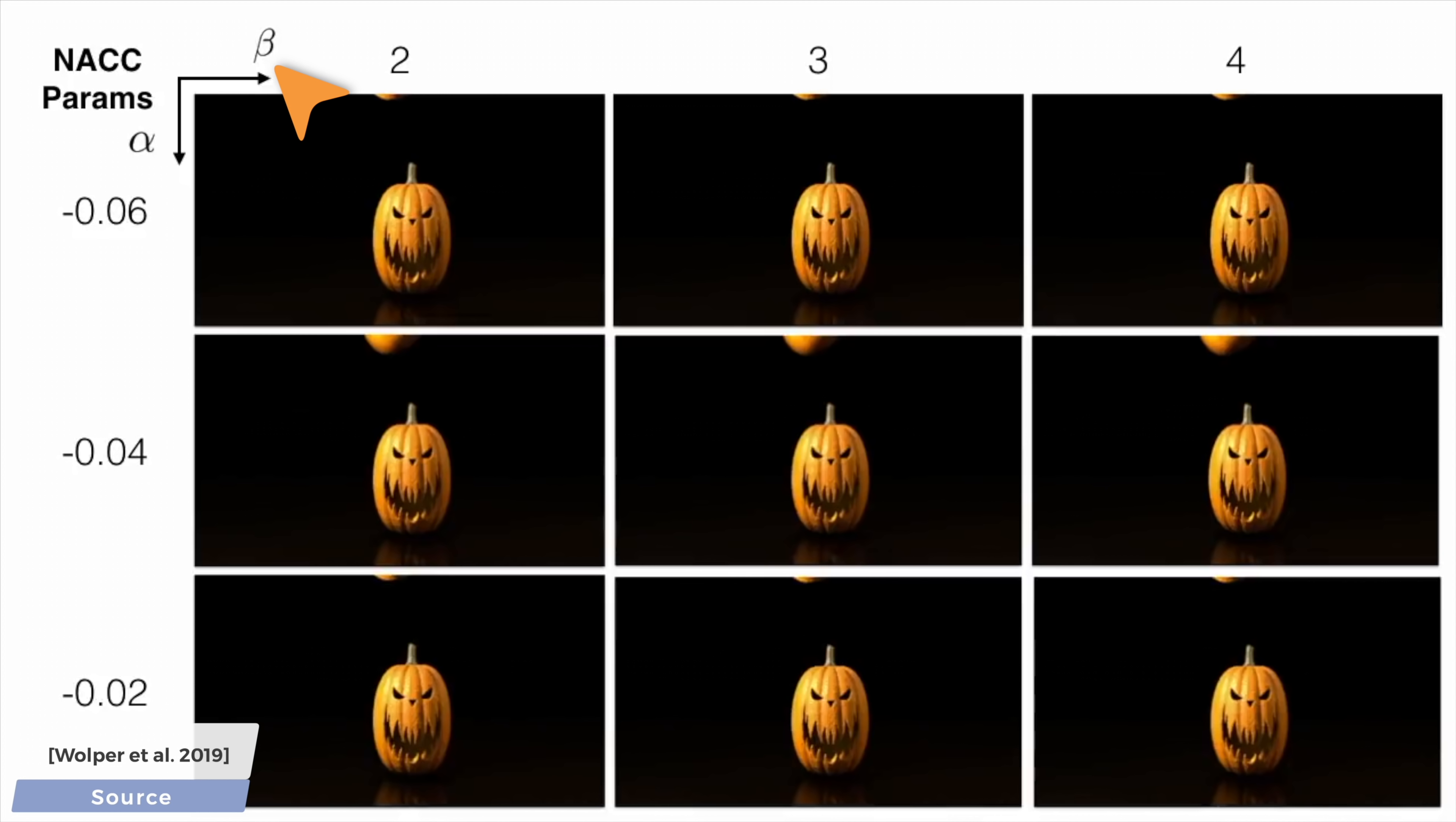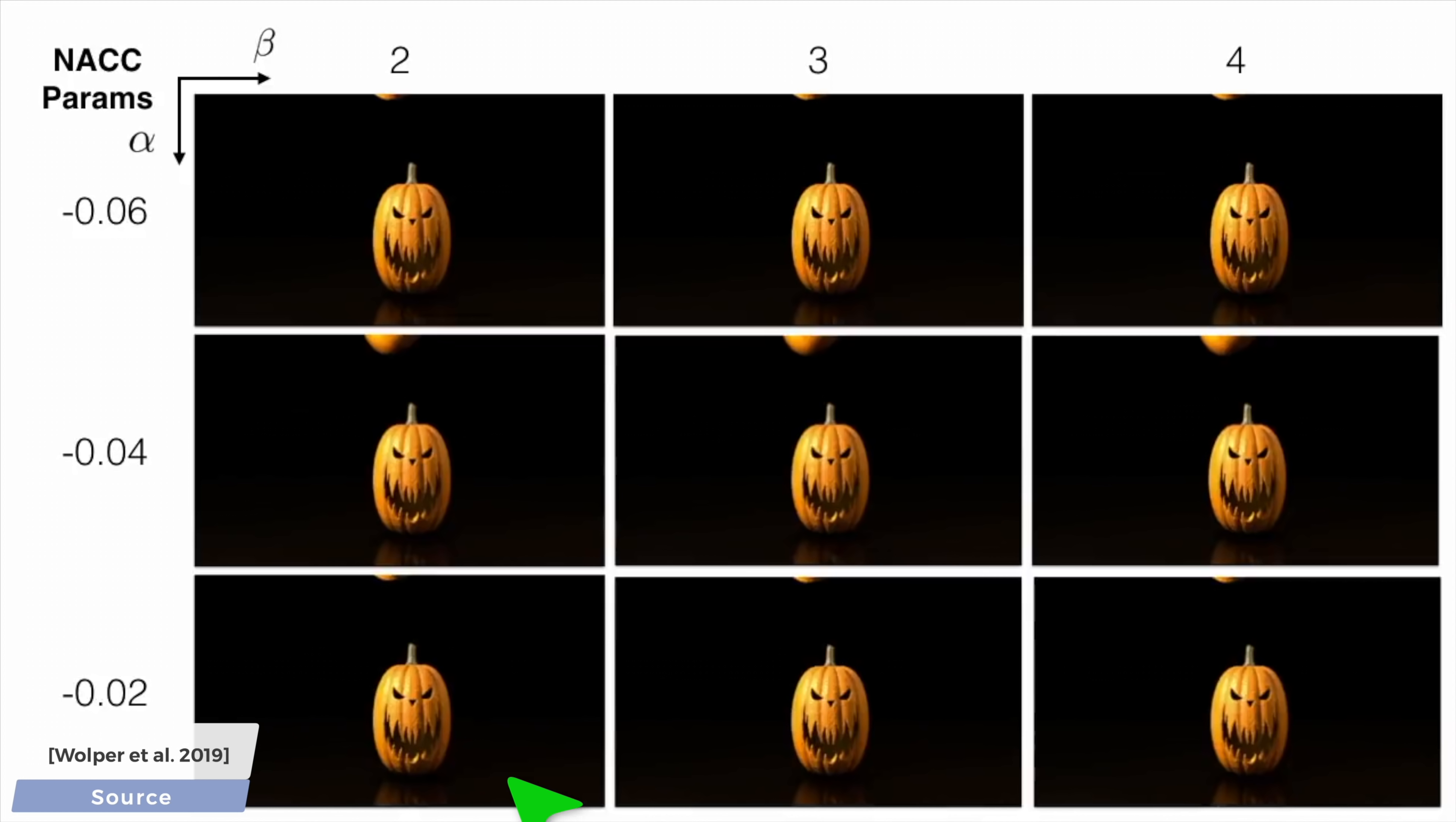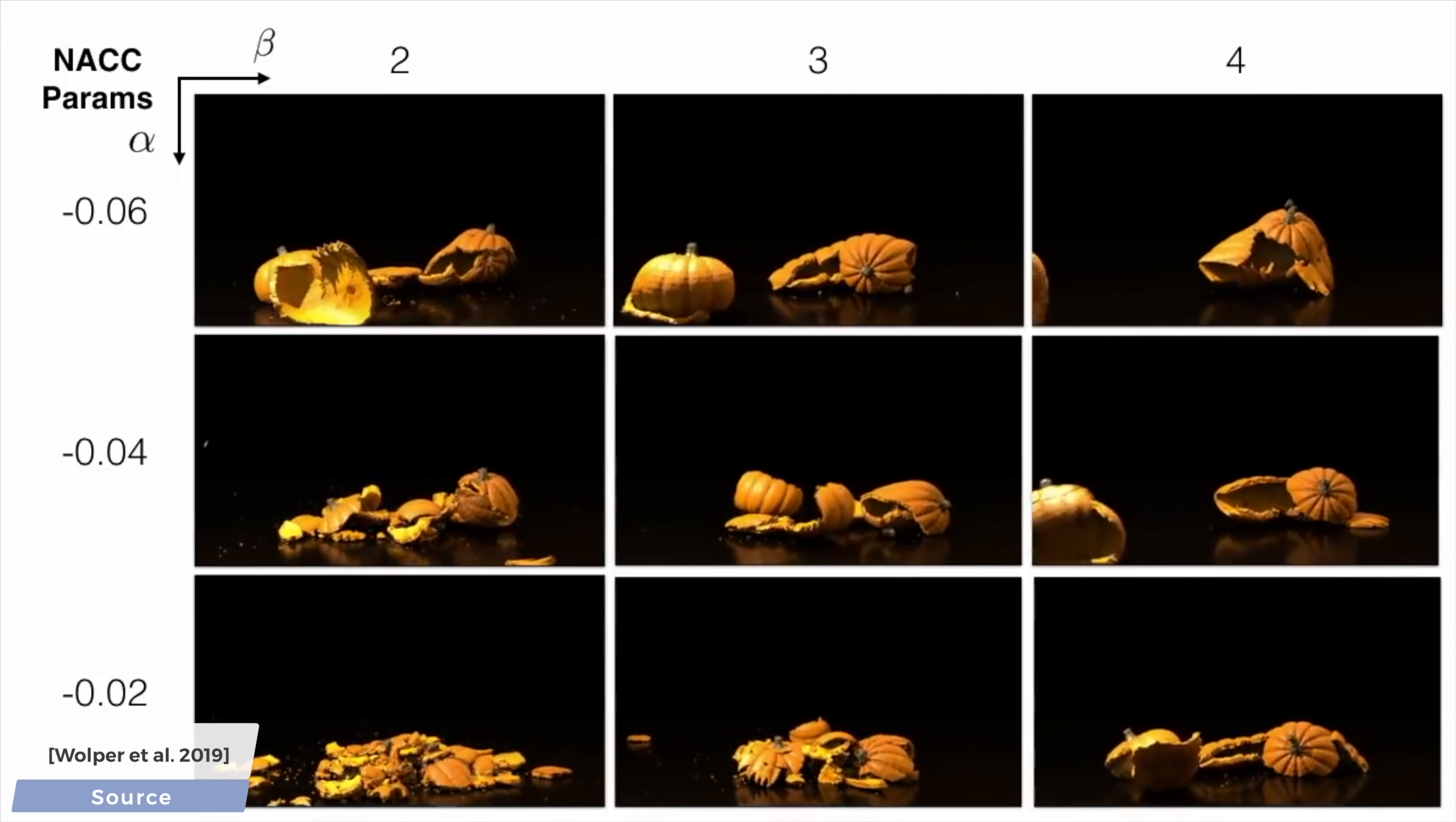So what does that mean exactly? Well, beta was cohesion, which is the force that holds matter together, so as we go to the right, the objects stay more intact, and as we go down, the objects shatter into more and more pieces. The method offers us more parameters than these, but even with these two, we can really make the kind of simulation we are looking for.